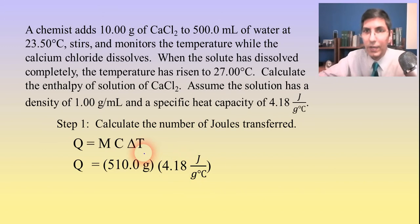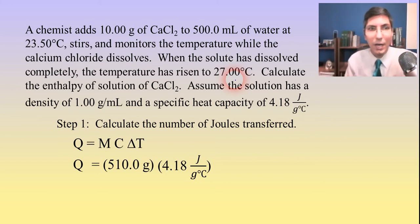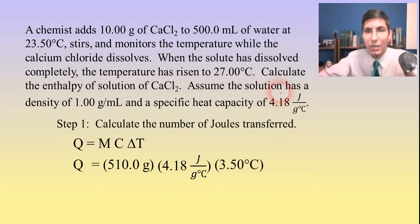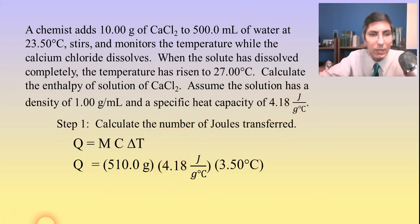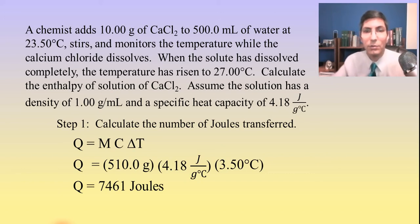The delta T: the temperature has gone up from 23.50 up to 27.00 degrees Celsius, so that's a rise of 3.50 degrees Celsius. When we calculate our Q, we can see that Q is 7,461 joules. I'm not going to round off until the very end, so I'm going to maintain those extra digits — 7,461 joules.